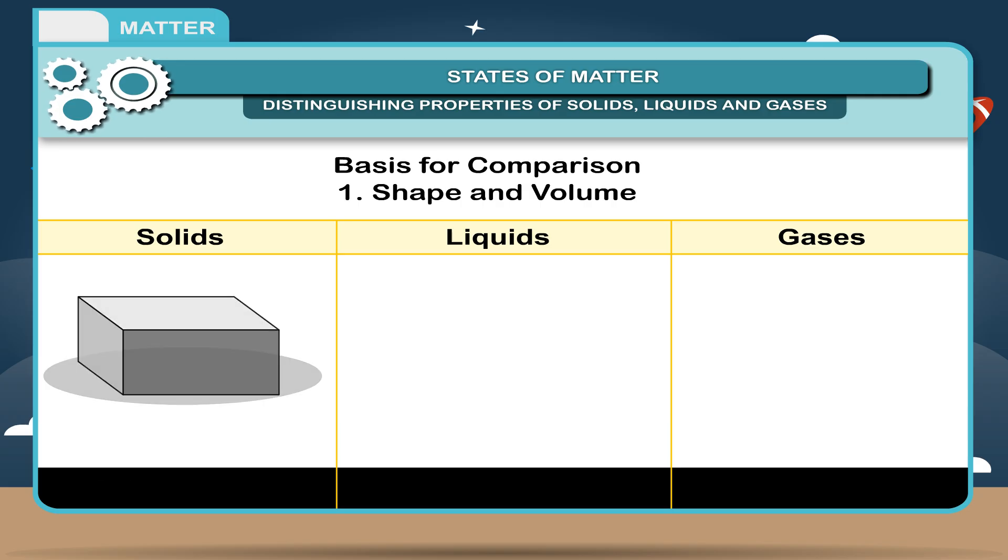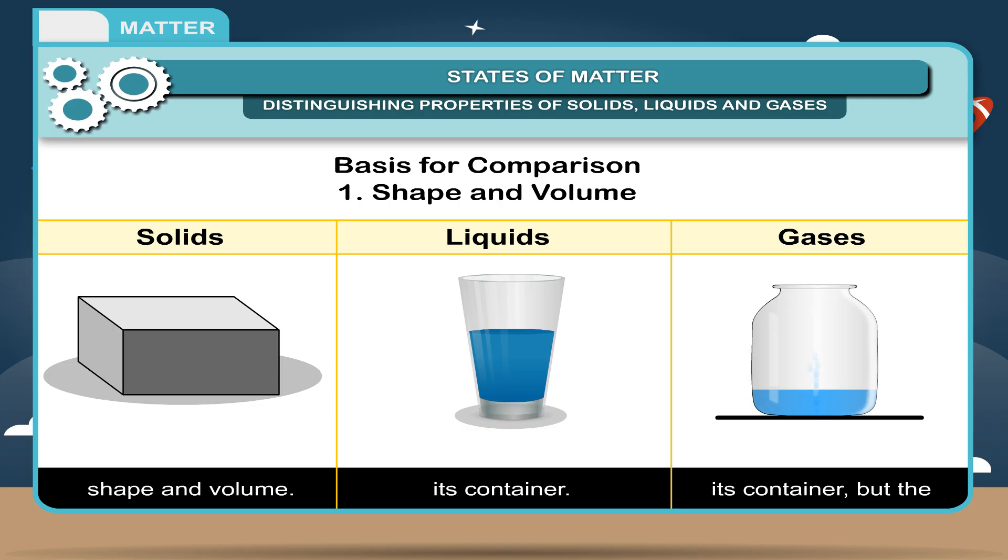1. Shape and volume: Solids retain the same shape and volume. Liquids retain the same volume but take the shape of their container. Gases take the shape of their container and the particles move around freely; they do not have the same volume.